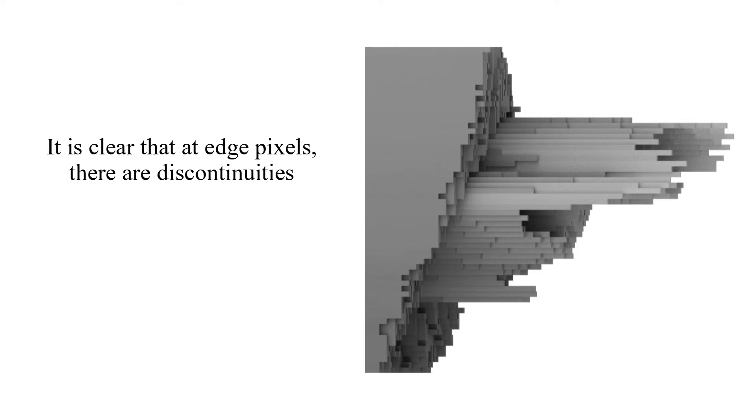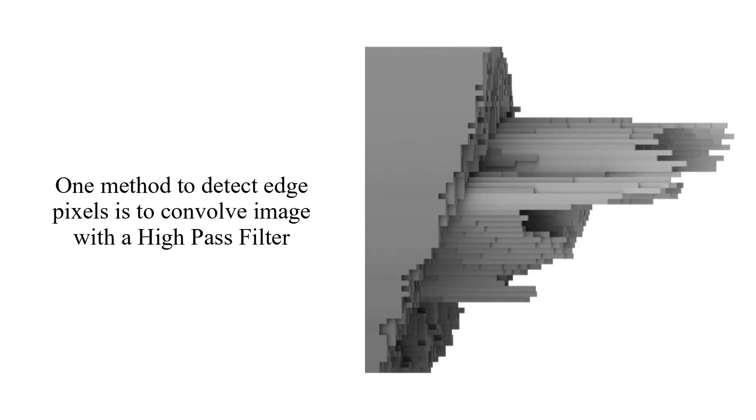It is clear that at edge pixels there are discontinuities. At the close neighborhood of edges pixel values change remarkably. One method to detect edge pixels is to convolve image with the high-pass filter.